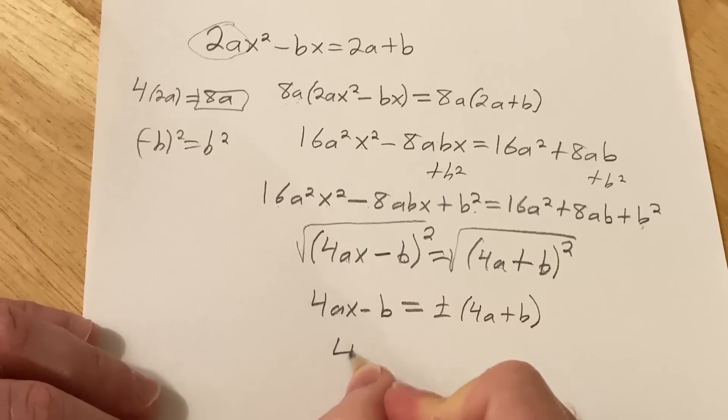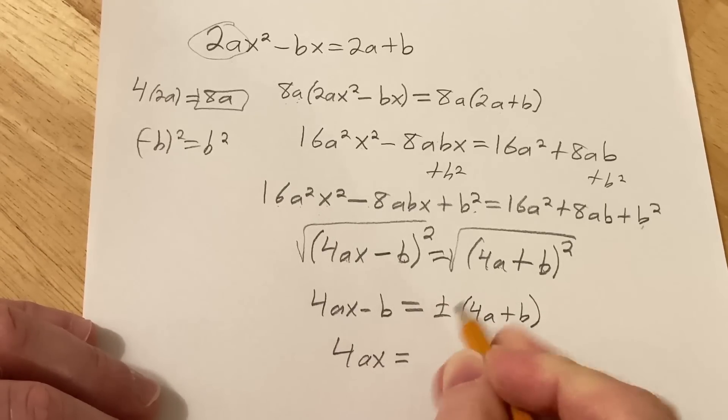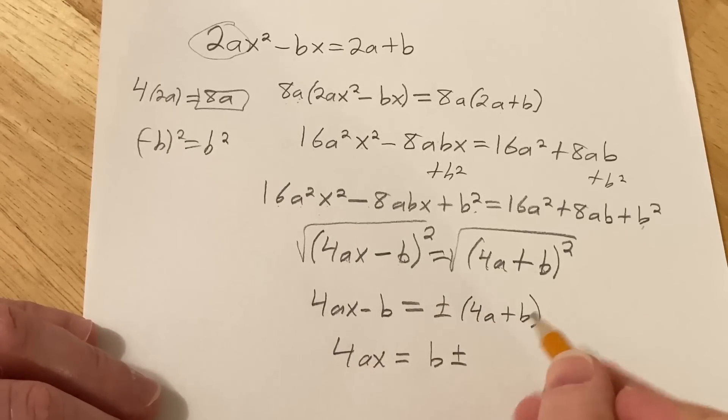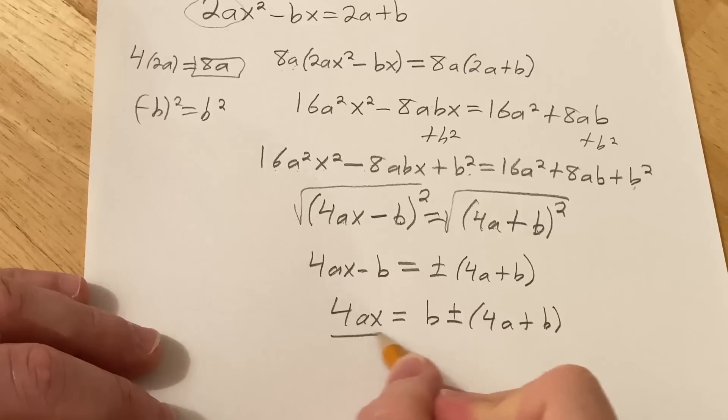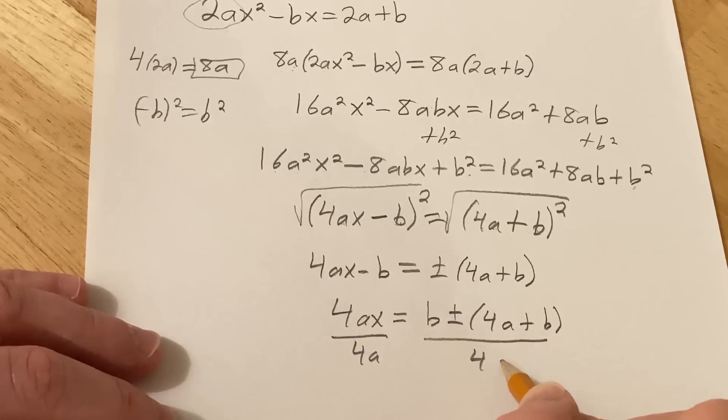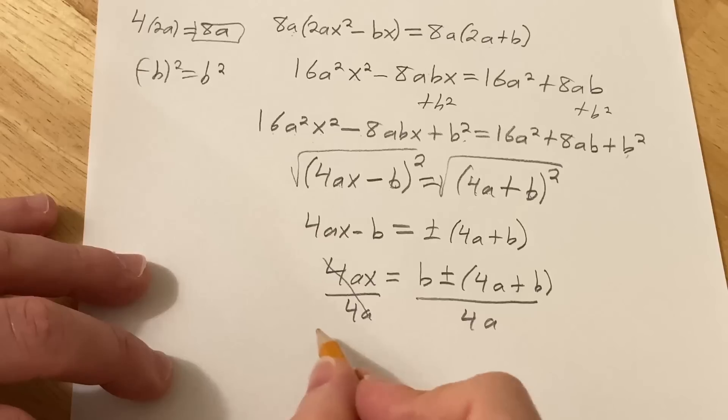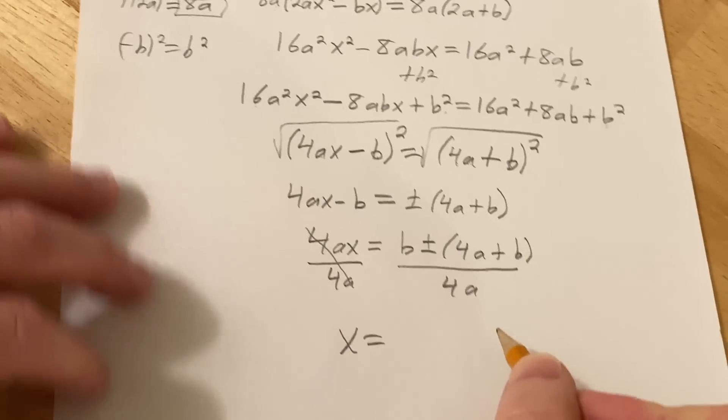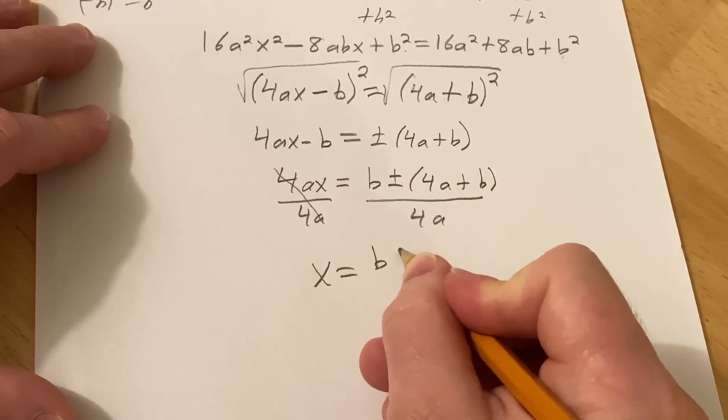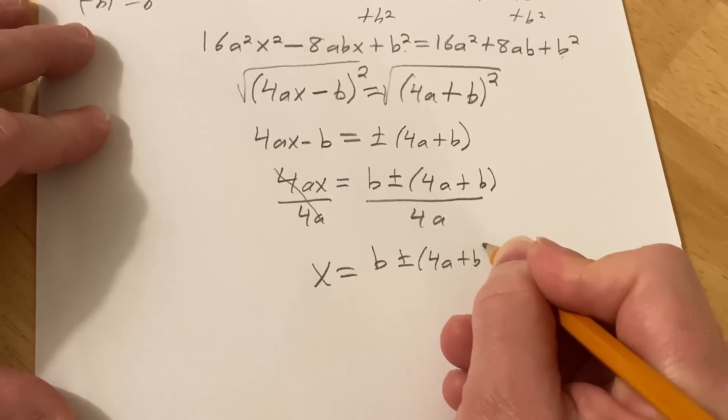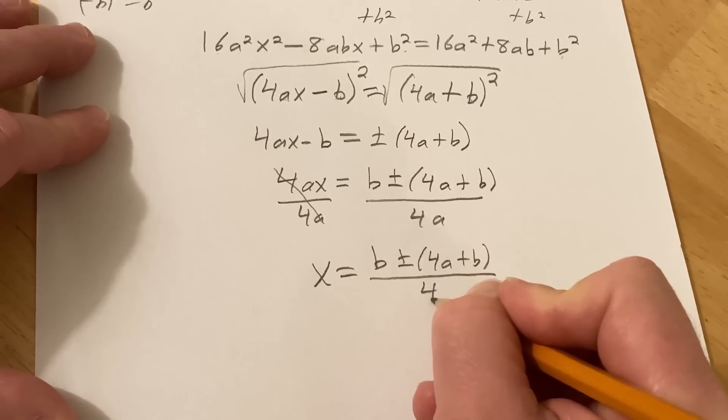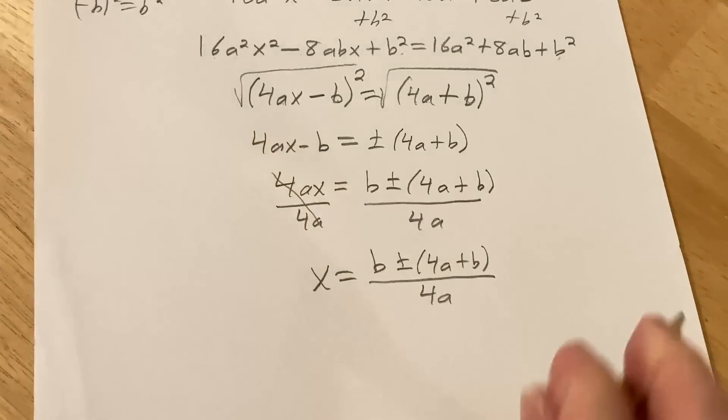And then we're going to add the b over. So 4ax equals b plus or minus. And then we have 4a plus b. And then let's divide by 4a. Obviously in all this a is not zero. So this is x equals b plus or minus parentheses 4a plus b all over 4a.